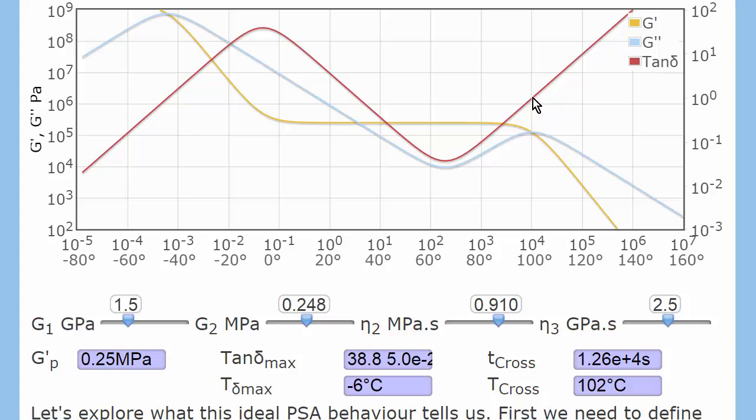So, all these can be calculated from the four inputs. The two moduli, the modulus at low temperature, high frequency, the modulus at the medium temperatures, and these two viscosities. What do these do?